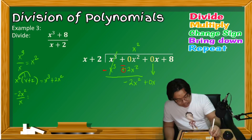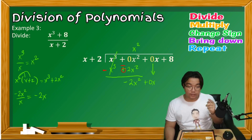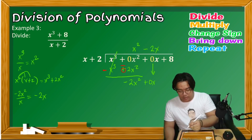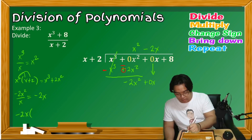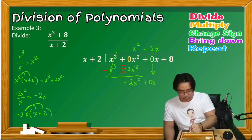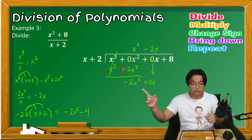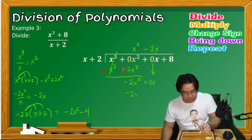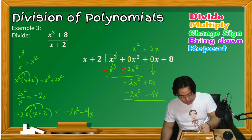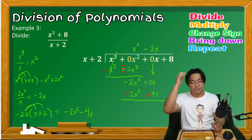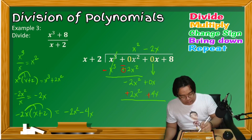Multiply negative 2x by divisor x + 2 using the distributive property to get negative 2x² − 4x, written below. Change the sign, then add: 0 + 4x = 4x, and bringing down +8 gives us 4x + 8. The long division process for polynomials follows the same steps as dividing numbers.